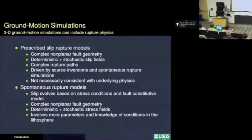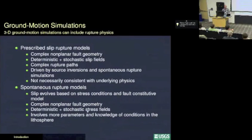A more sophisticated approach, but one that involves a lot more uncertainty, is to use spontaneous rupture models where the slip evolves based on the stress conditions and the fault constitutive model. You can take into account complex non-planar fault geometry using some of the most sophisticated codes. In this case, you generally have a deterministic and stochastic stress component, and you're relying on models farther removed from observations — you have to take observations about GPS, InSAR, deformation, the stress field, and how that stress field evolves over time. There are a lot more parameters and it requires much more detailed knowledge of the conditions of the lithosphere.